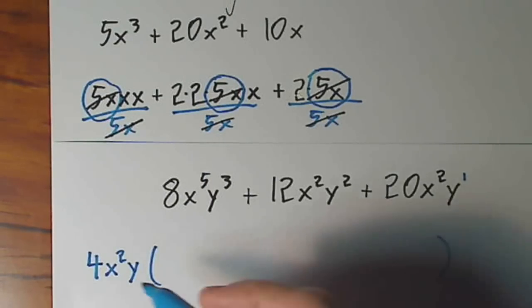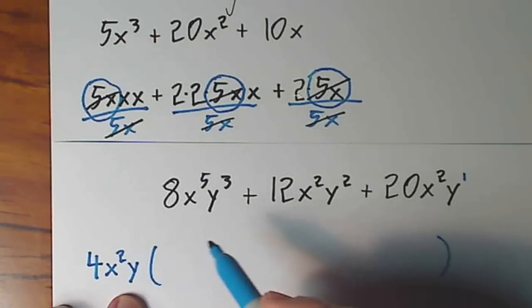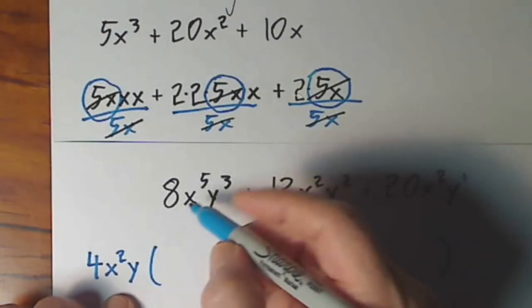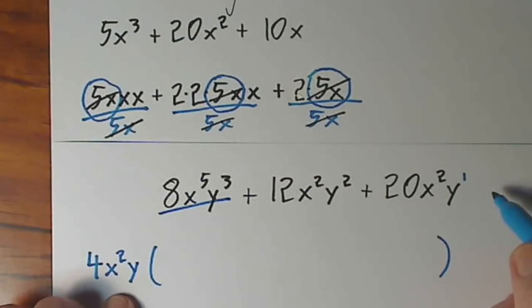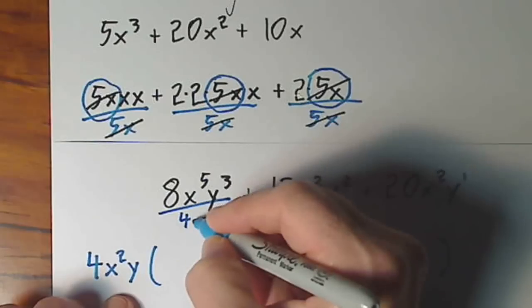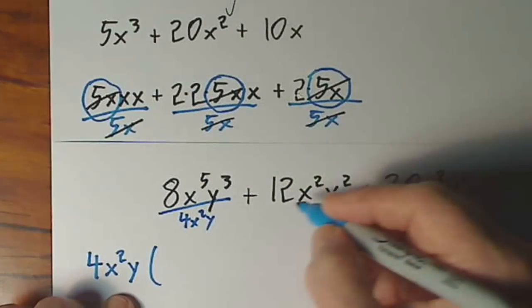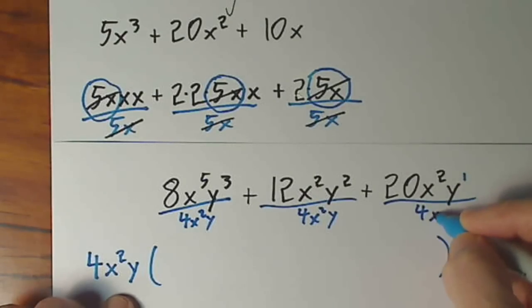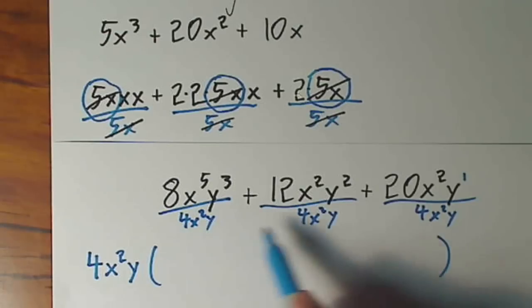And again, if I'm going to divide by 4x squared y, this is how I indicate I'm willing to multiply by 4x squared y to get right back to where we started. We're preserving the value of the original polynomial this way. So I'm going to divide by 4x squared y. I'm going to divide by 4x squared y. And divide by 4x squared y. Normally, I don't write this in here. It's too cumbersome. But I'm just really trying to demonstrate what we're doing when we factor out the greatest common factor.